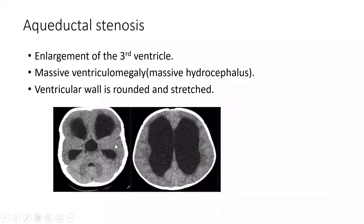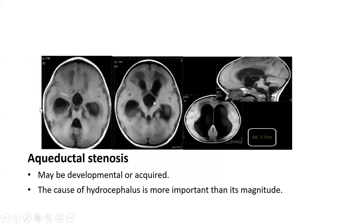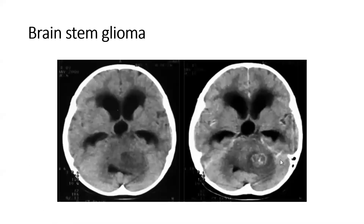There is enlargement of the third ventricle with massive ventriculomegaly and the ventricular wall is rounded and stretched. On MRI, features are the same as CT. Dilatation of lateral and third ventricles is ballooned because the obstruction is near to them. Brainstem glioma, including enhancing glioblastoma multiforme, can obstruct the aqueduct and compress the fourth ventricle — so-called supratentorial hydrocephalus.